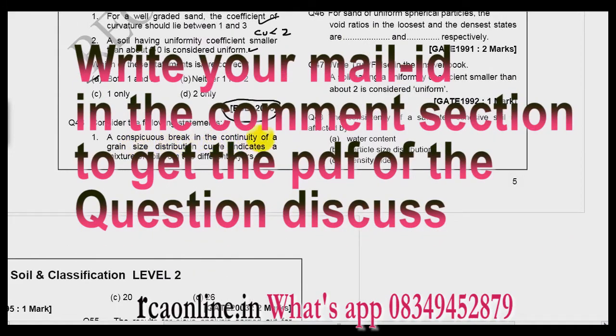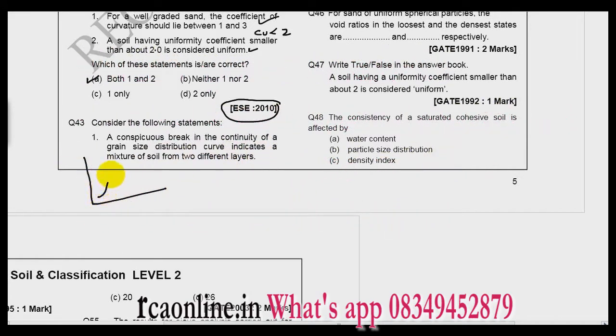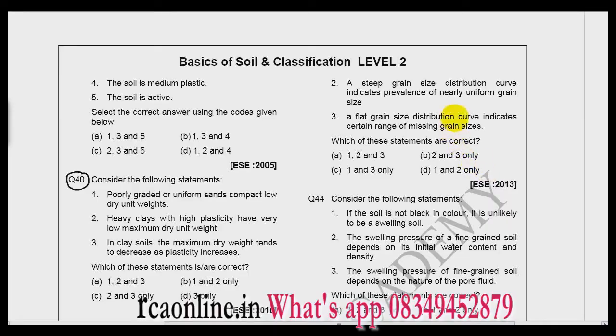A conspicuous break in the continuity of a grain size distribution curve indicates a mixture of soil from two different layers. This is a brilliant observation. If you see this type of grain size analysis, it means that the soil has come from two different layers. So this is right.